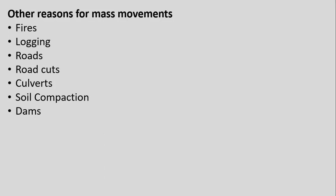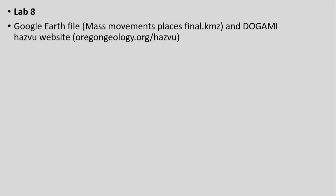There are many various reasons we might see these different types of mass movements. Human activities also play a role: fires and logging removing trees, putting in roads and road cuts, culverts, dams, and going over and compacting soil. There are a lot of different factors that can make areas more likely to end up having mass movements.